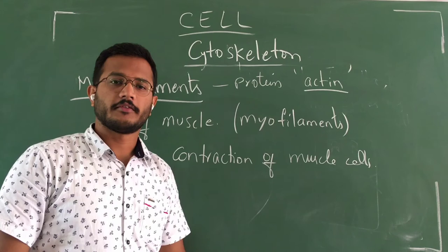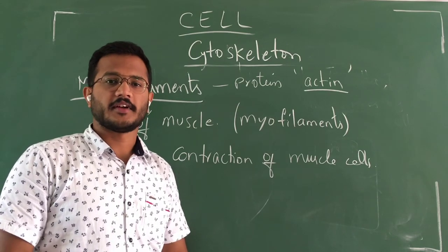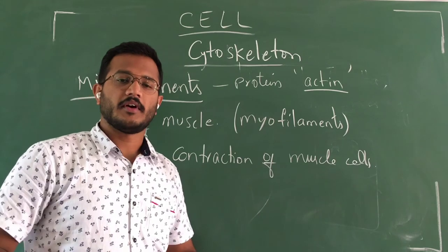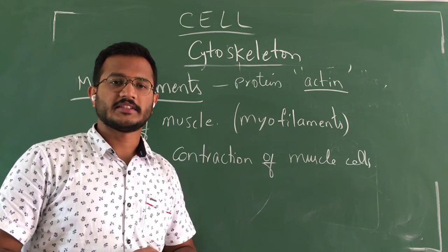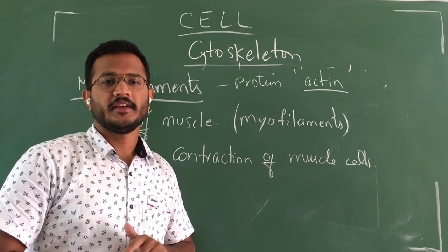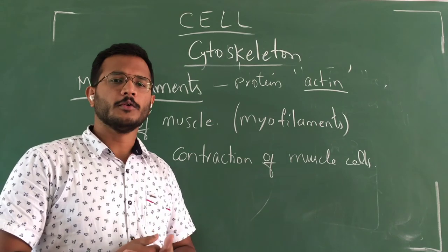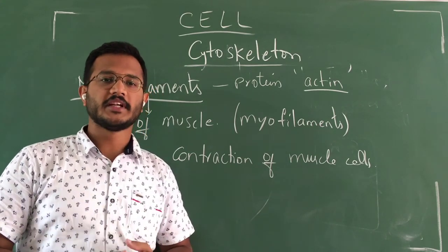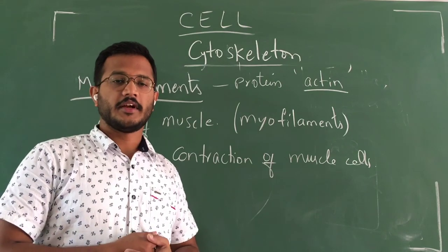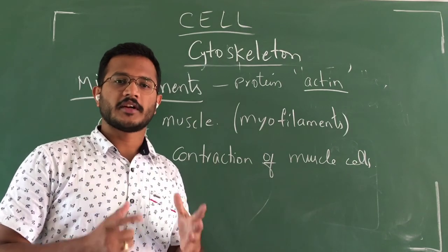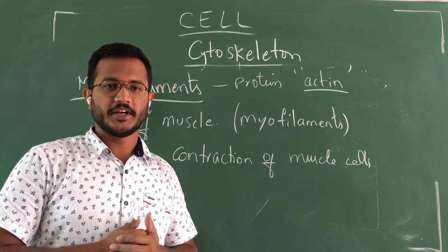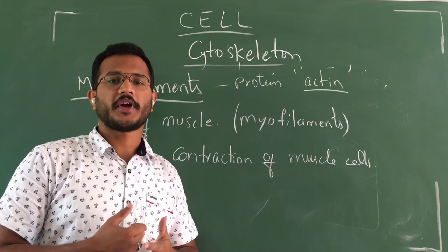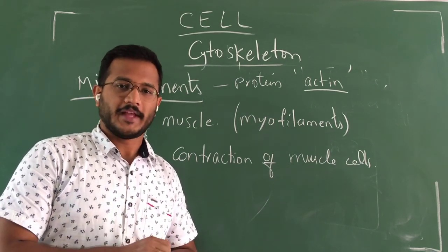The function of flagella and cilia is mainly for locomotion. This is about the remaining cell organelles present in a cell — microbodies (peroxisomes and glyoxysomes) and cytoskeleton elements (microtubules and microfilaments). In the next video, we will discuss some specialized structures present in prokaryotic cells. Thank you.